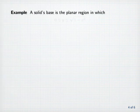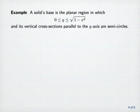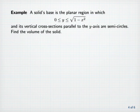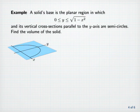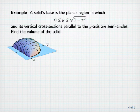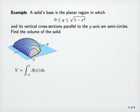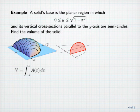Example: A solid whose base is the planar region in which y is between zero and the square root of one minus x squared, and its vertical cross-sections parallel to the y-axis are semicircles. Find the volume of the solid. The graph of y equals the square root of one minus x squared is the top half of the unit circle, so here's the base of our solid. Here's the outline of a typical cross-section, and the solid looks like this. The volume will be the integral of cross-sectional area from x equals minus one to x equals one. We now need the cross-sectional area A of x. Since cross-sections are semicircles, their areas will be given by pi times one-half the square of the radius r.